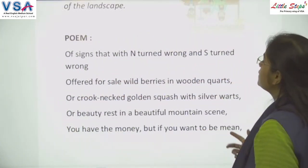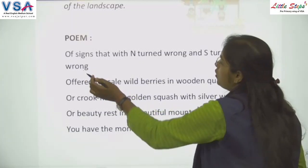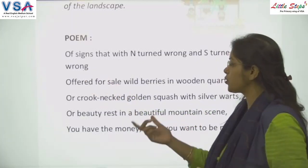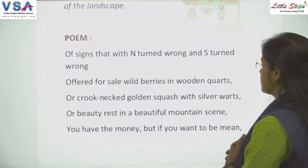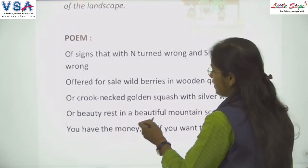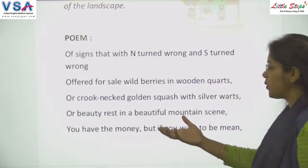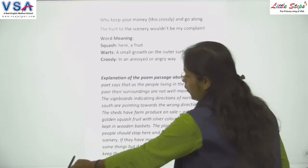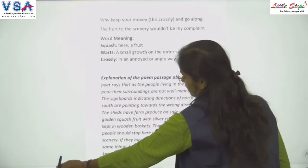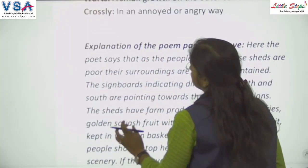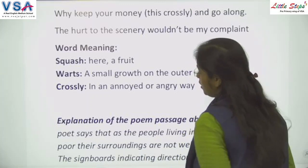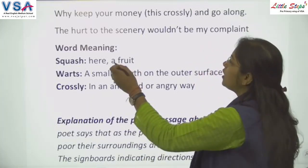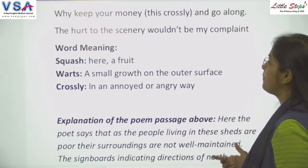Of signs that with a turned wrong and as turned wrong, offered for sale wild berries in wooden quarts, or crook-necked golden squash with silver warts, or beauty rest in a beautiful mountain scene. You have the money, but if you want to be mean — why keep your money crossly and go along? The hurt to the scenery wouldn't be my complaint.